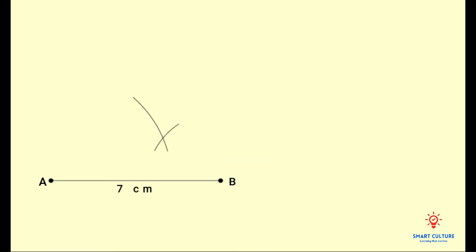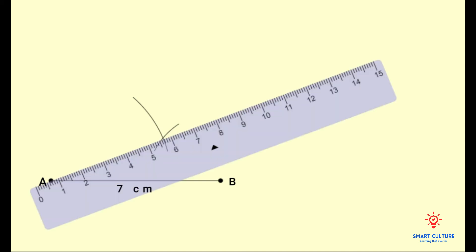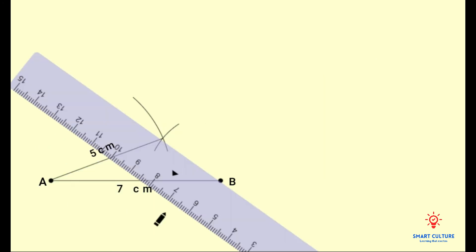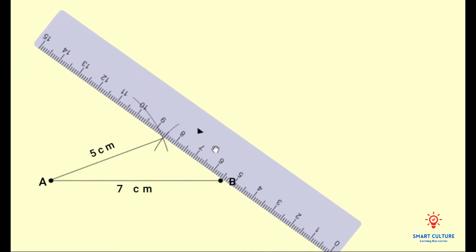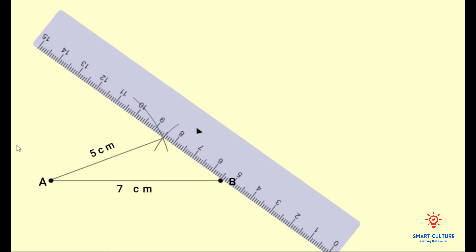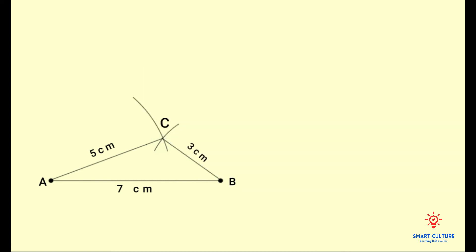Note where this arc crosses the first arc. This will be the third vertex of the triangle. Now you can use your ruler to join points A and B to the point where the arcs intersect. We'll label this point C, and this is how you can go about constructing triangle ABC with side lengths of three centimeters, five centimeters, and seven centimeters.